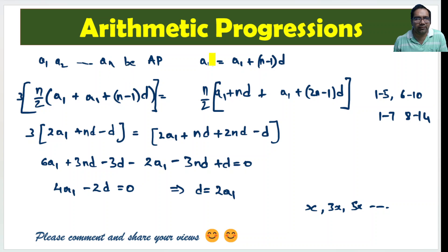What is an arithmetic progression? The nth term in an arithmetic progression is a1 plus n minus 1 into d. d is the common difference. We know this formula. nth term is first term plus n minus 1 times d.